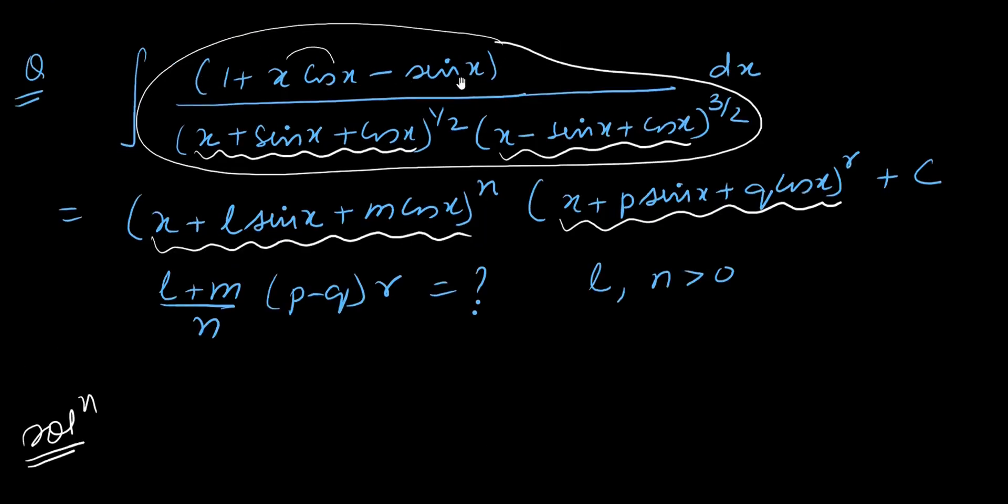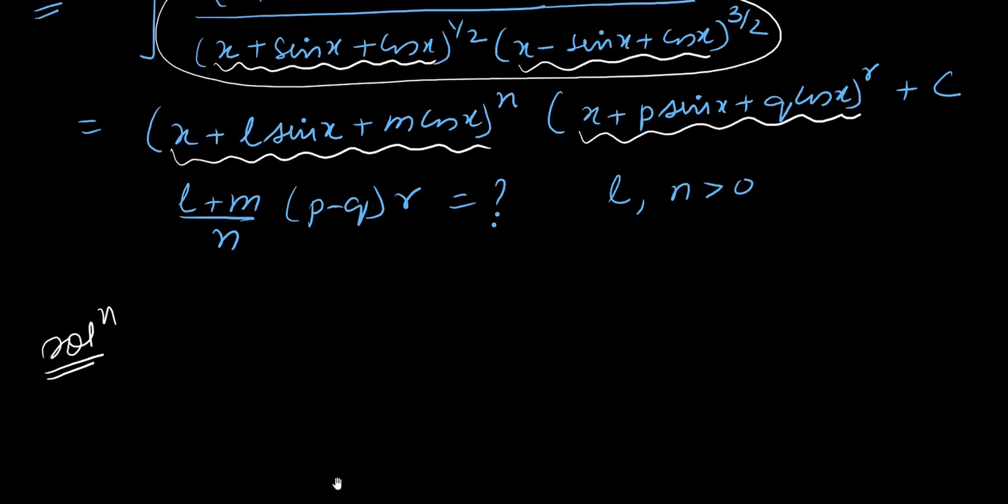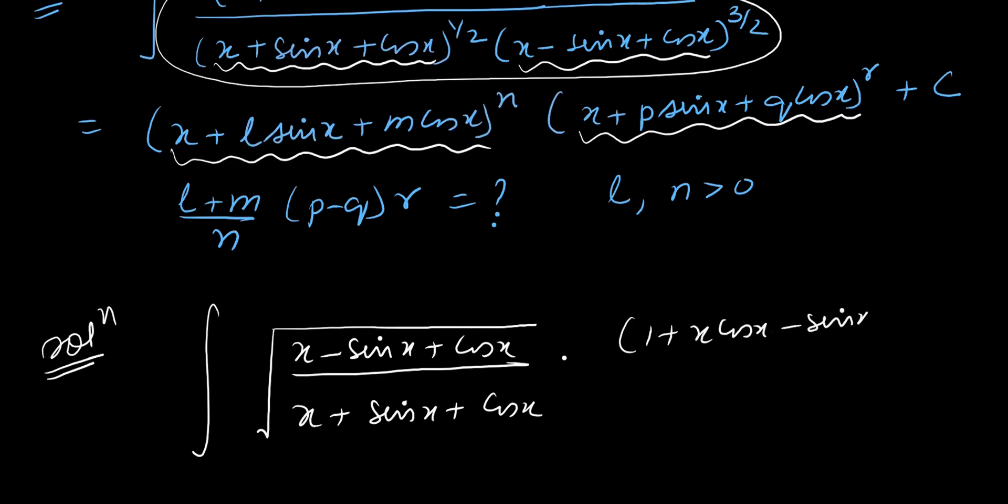Product of these two means what we can think of. Look at the expression. Numerator, this expression is definitely going to contribute in dx. After looking at this expression, it is square root and whole power 3 by 2. I just have rewritten the question in this form: under root of (x minus sin x plus cos x) upon (x plus sin x plus cos x). I have just multiplied and divided it with root over (x minus sin x plus cos x).